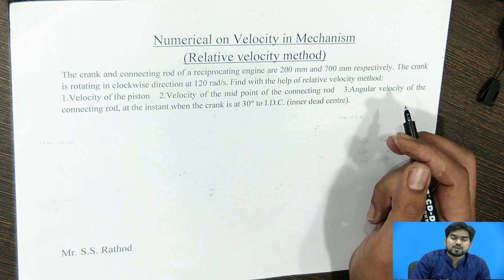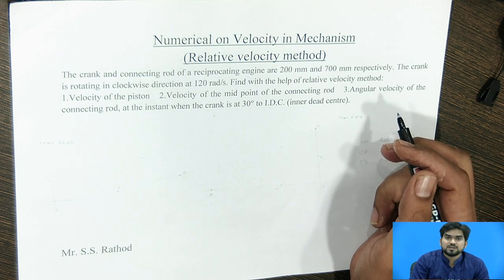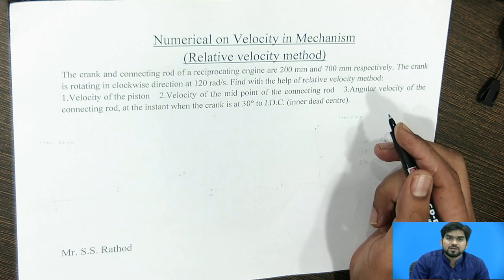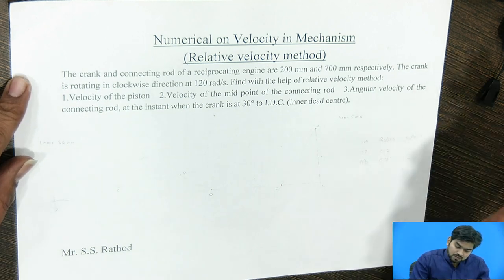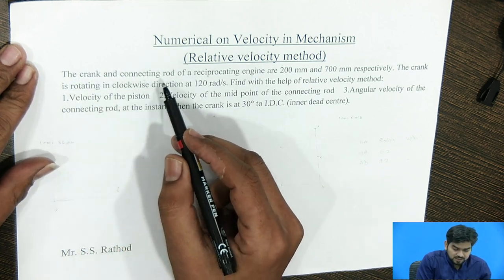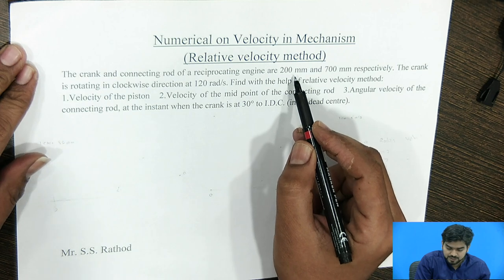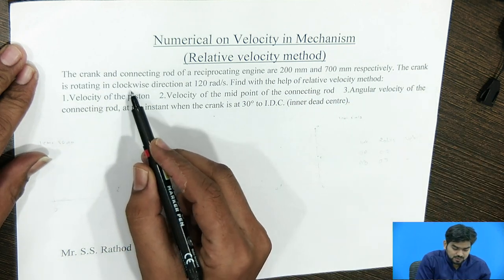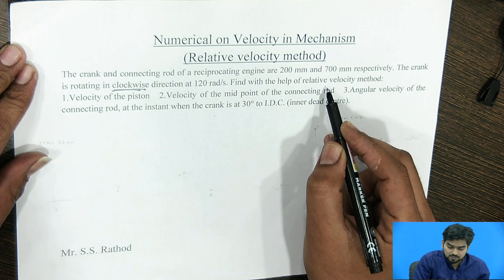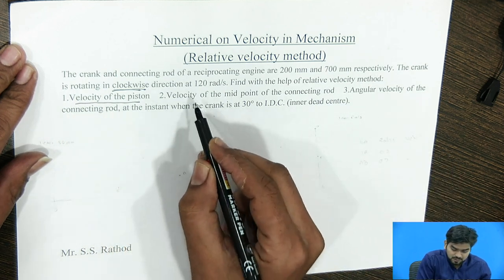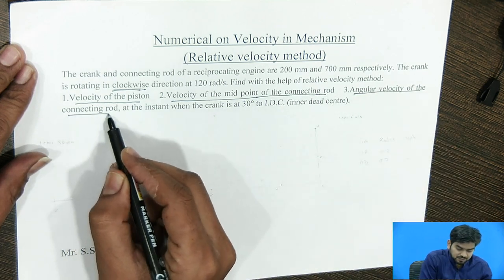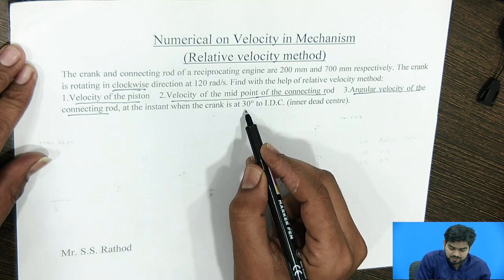In the last lecture, we have seen the basic concept behind the Relative Velocity Method. Today we will solve one numerical on the Relative Velocity Method. The problem is about the slider crank mechanism. The crank and the connecting rod of a reciprocating engine are 200 mm and 700 mm respectively. The crank is rotated in the clockwise direction at 120 radian per second. Find, with the help of the Relative Velocity Method: first, velocity of piston; second, velocity of midpoint of the connecting rod; and angular velocity of the connecting rod — at the instant when the crank is at 30 degrees to the IDC.